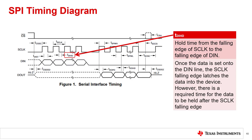TDIHD is the hold time for the DIN data. When the data is clocked in on the falling edge of S-Clock, DIN must be stable from the setup time before and the hold time after the S-Clock falling edge.